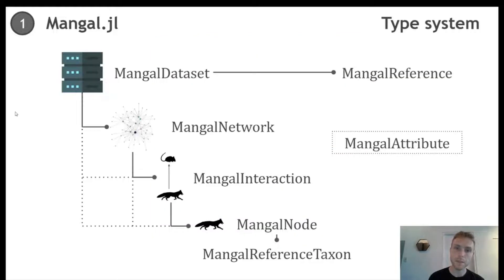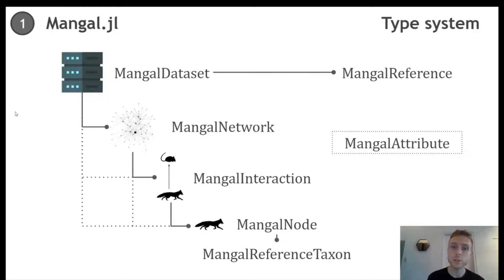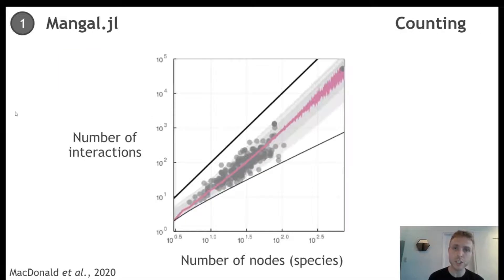It uses a type system in which objects are nested within one another. When we query an object, it will return all objects below. In consequence, we need to wait a bit longer to get our data, but they are complete. To speed up the process, it uses a caching mechanism in which objects are read from cache when needed. Mangal can also be used to count fundamental quantities of ecological networks, such as the number of nodes and the number of interactions in a network. This is super useful in ecology, because these two quantities are strongly linked together and are associated with other measures of network topology.